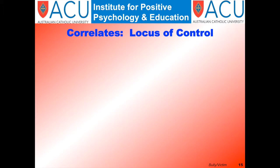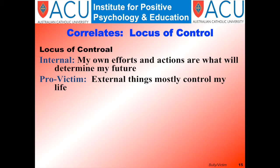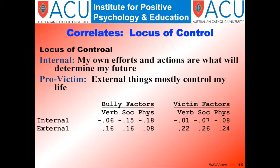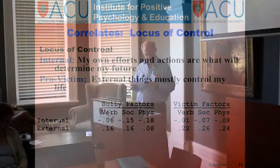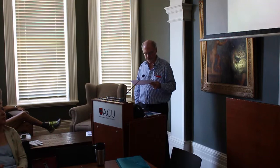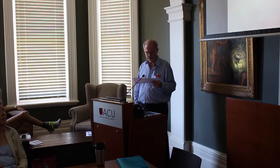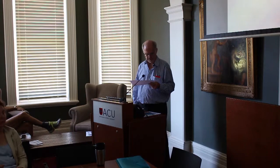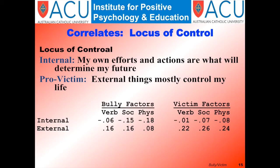The next variable was locus of control. We had separate internal and external locus of control scales. External locus of control was positively related to both bully and particularly victim factors, while internal locus of control tended to be negatively related to both. The pattern of high external and low internal scores was not surprising for victim factors, but was somewhat unexpected for the bully factors, suggesting that bullying behaviors may represent attempts to regain control over an environment perceived as uncontrollable.